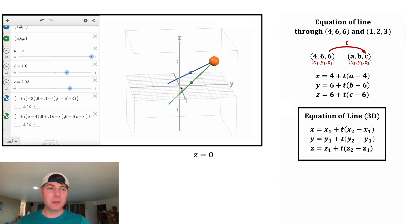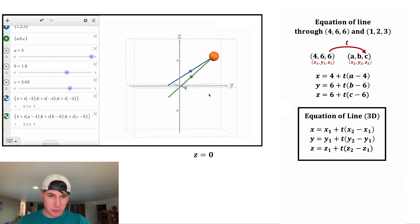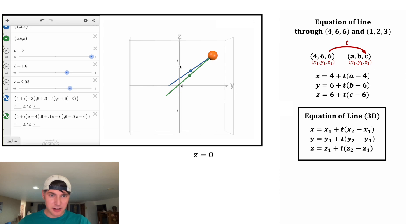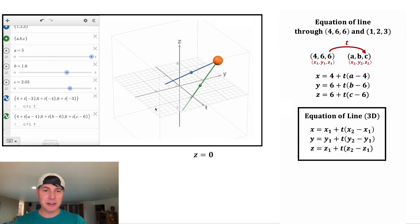So to do this on the x, y plane, the z is gonna be equal to zero because that's what the x, y plane is. So z is this height here. If z is zero, we're on the x, y plane. So I just wanna set this z right here equal to zero. So to do that, we'll say 6 plus t times (c minus 6) equals zero. We're gonna subtract 6 from both sides and then we'll divide both sides by (c minus 6). That gives us our value of t that would be equal to zero.